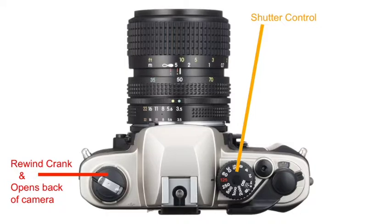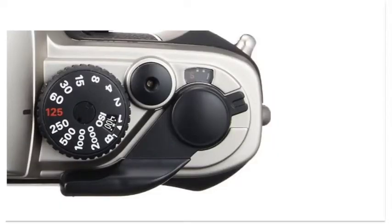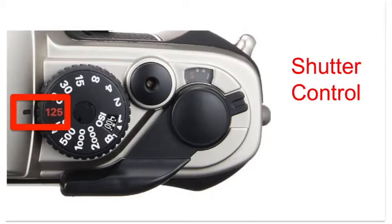On the other side of the camera, towards the center, you will find the shutter control dial. This is a series of numbers ranging from 1 to 2000. The shutter control dial also has a small window with ISO printed below it. The shutter in the camera controls how long it takes to take a photograph — these numbers represent the time. The shutter can also control how motion looks in your photograph. Whatever number is next to the black line on the camera is what the shutter is set to.